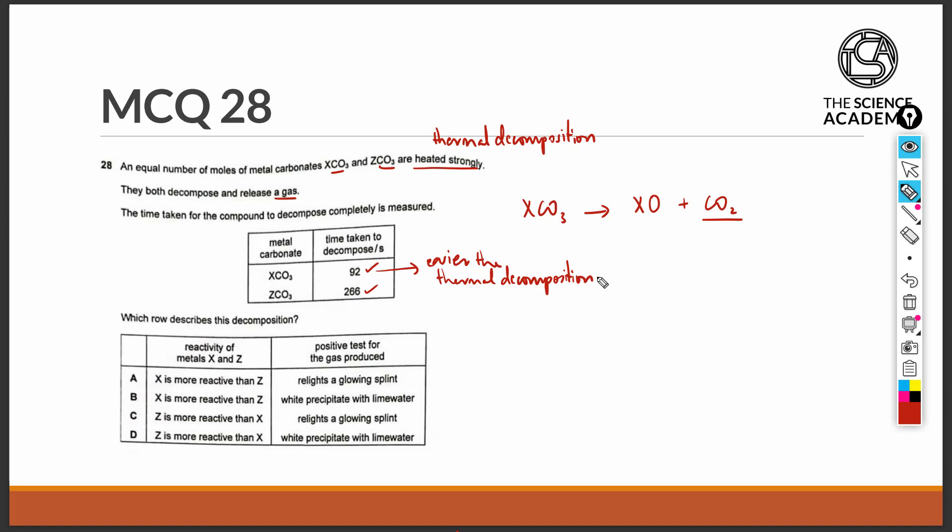And we know that the more reactive the metal, the more likely it is to stay in the compound or the ionic form, and the harder it is to thermally decompose that compound. So an easy thermal decomposition will mean that the metal is not going to be very reactive.